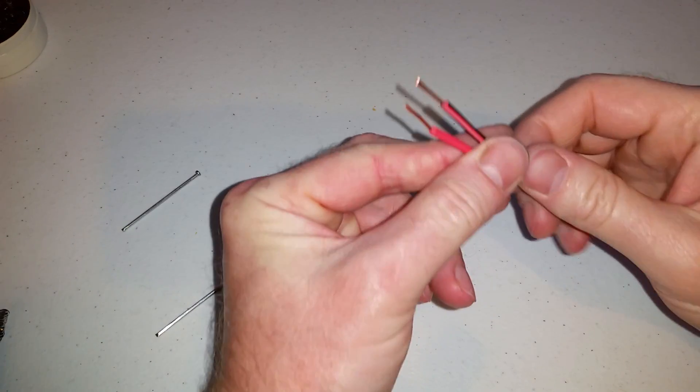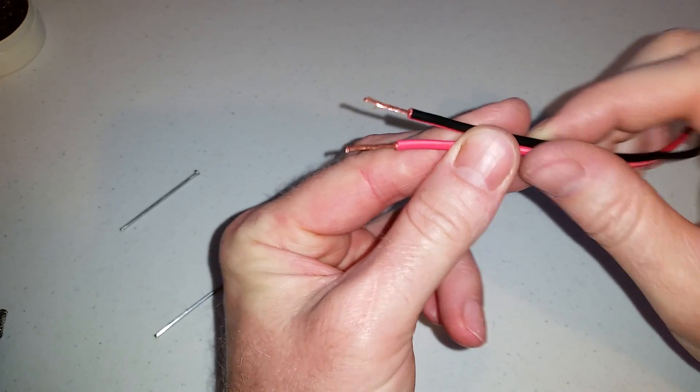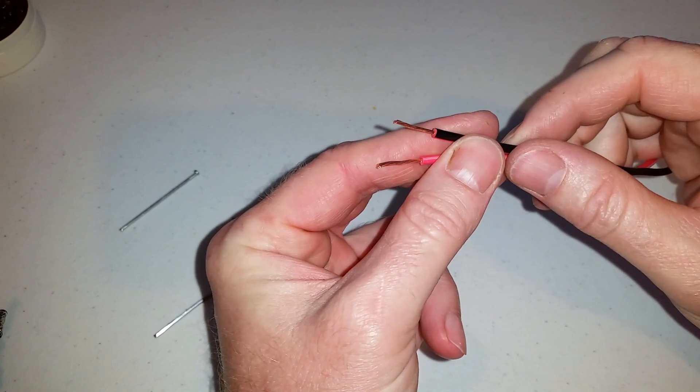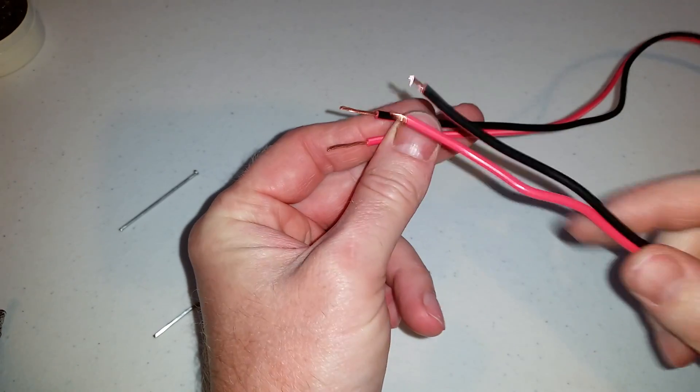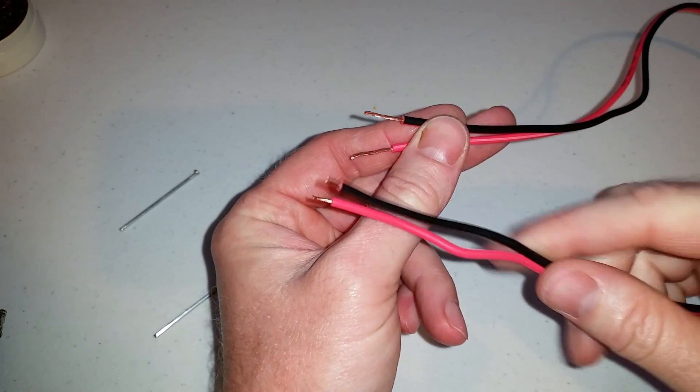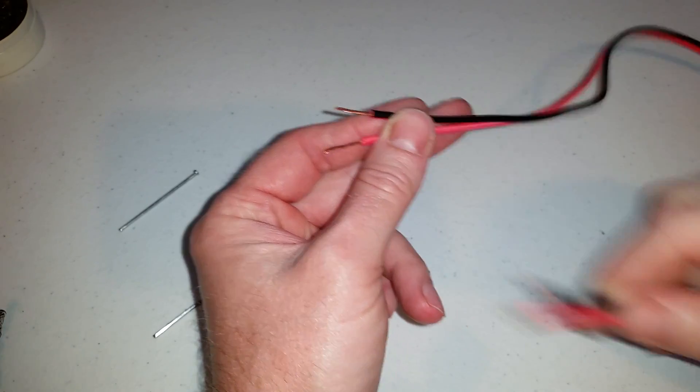So I took the ends of my speaker wire and stripped about a half inch or three-eighths of an inch off the ends and about an eighth of an inch where the banana plugs will go.